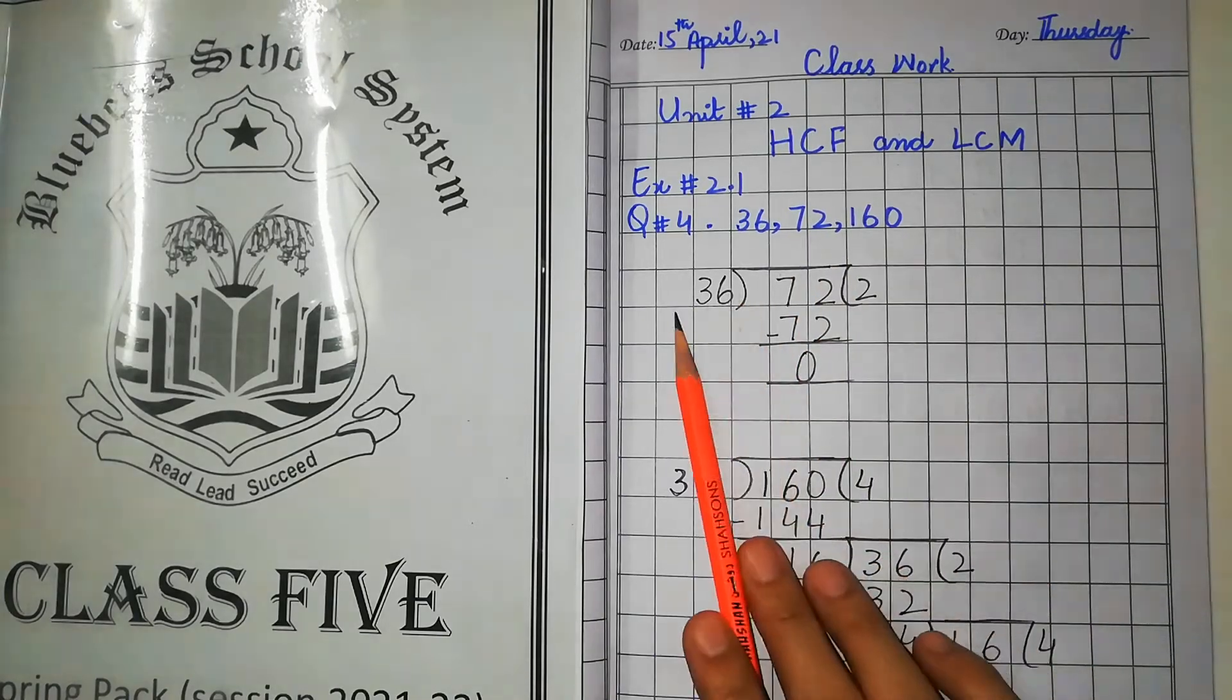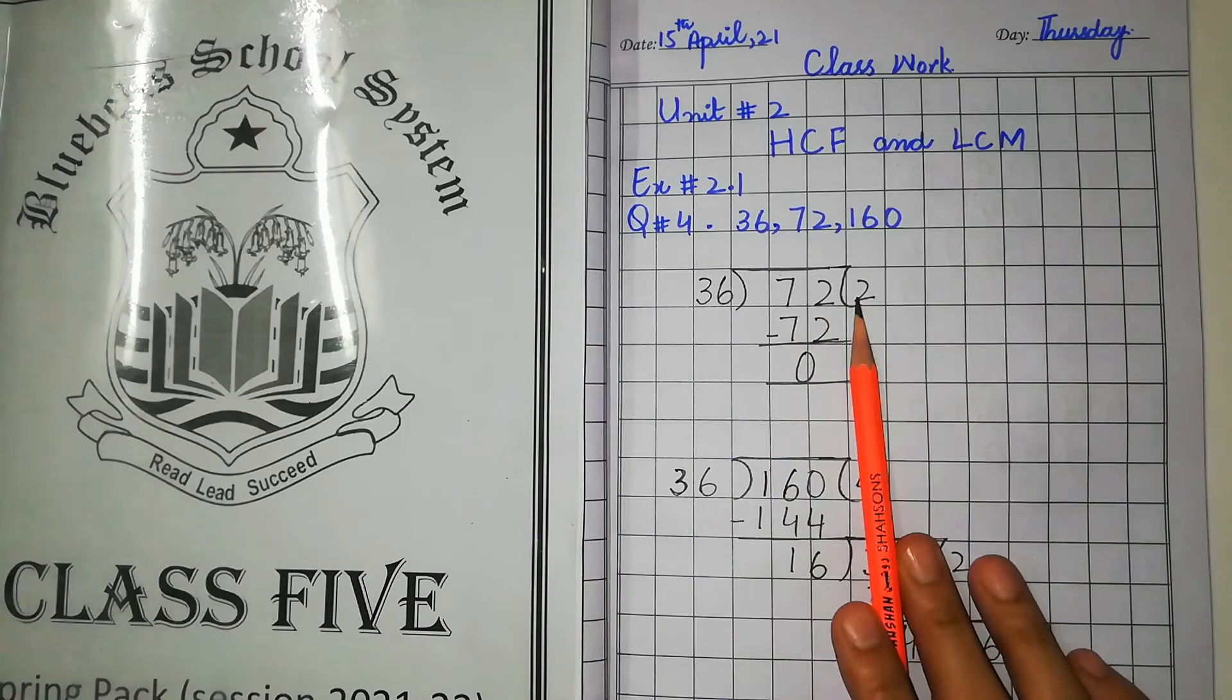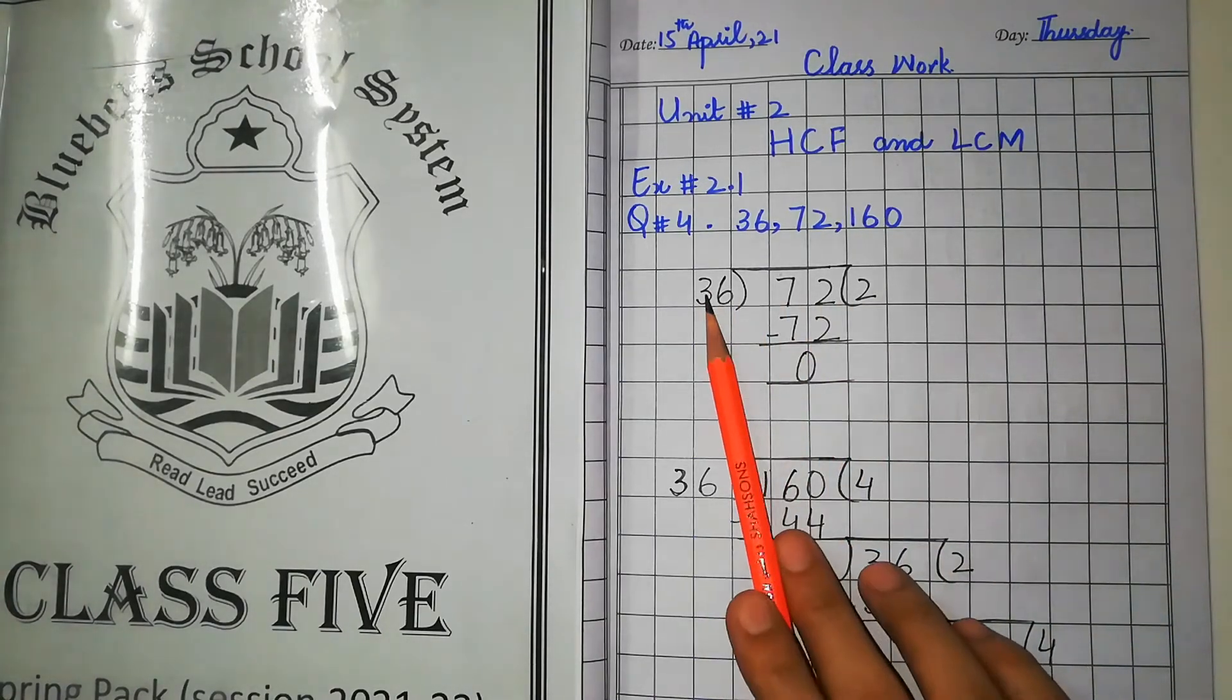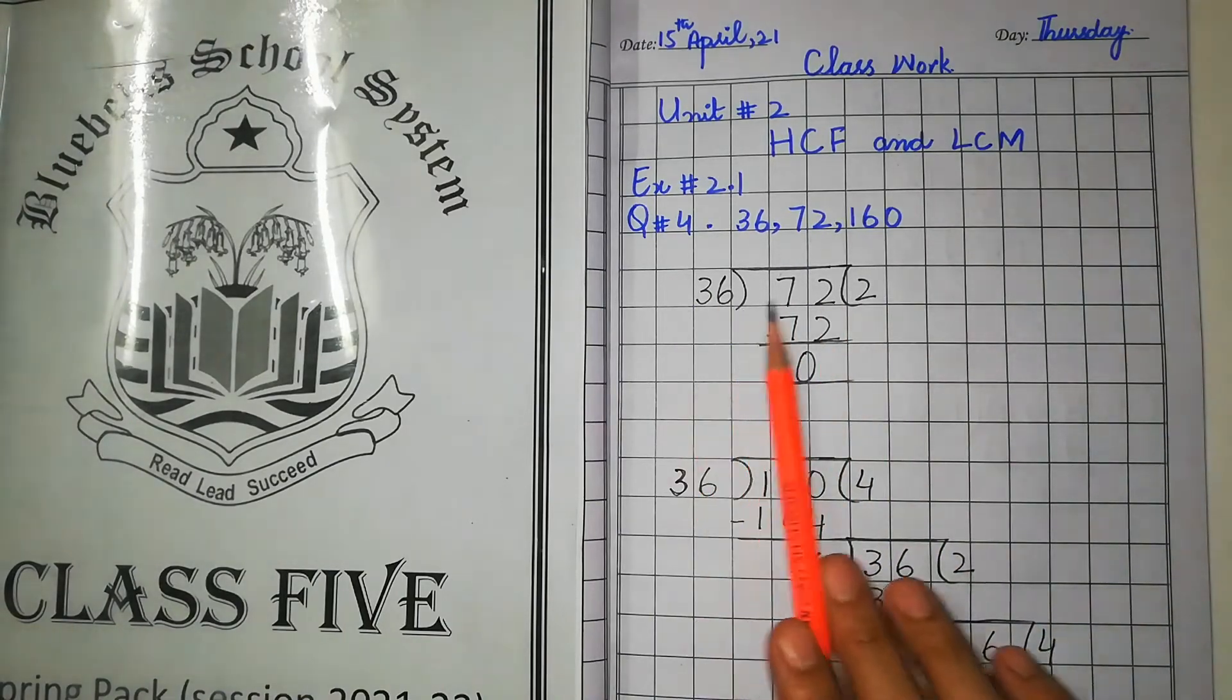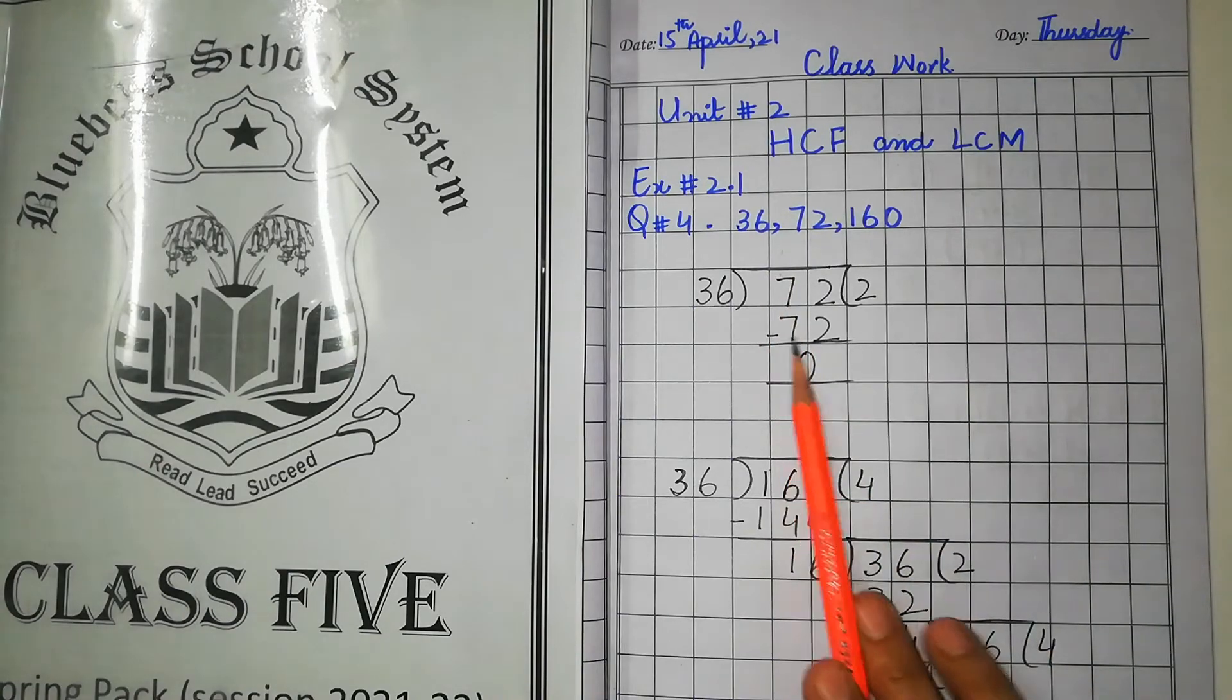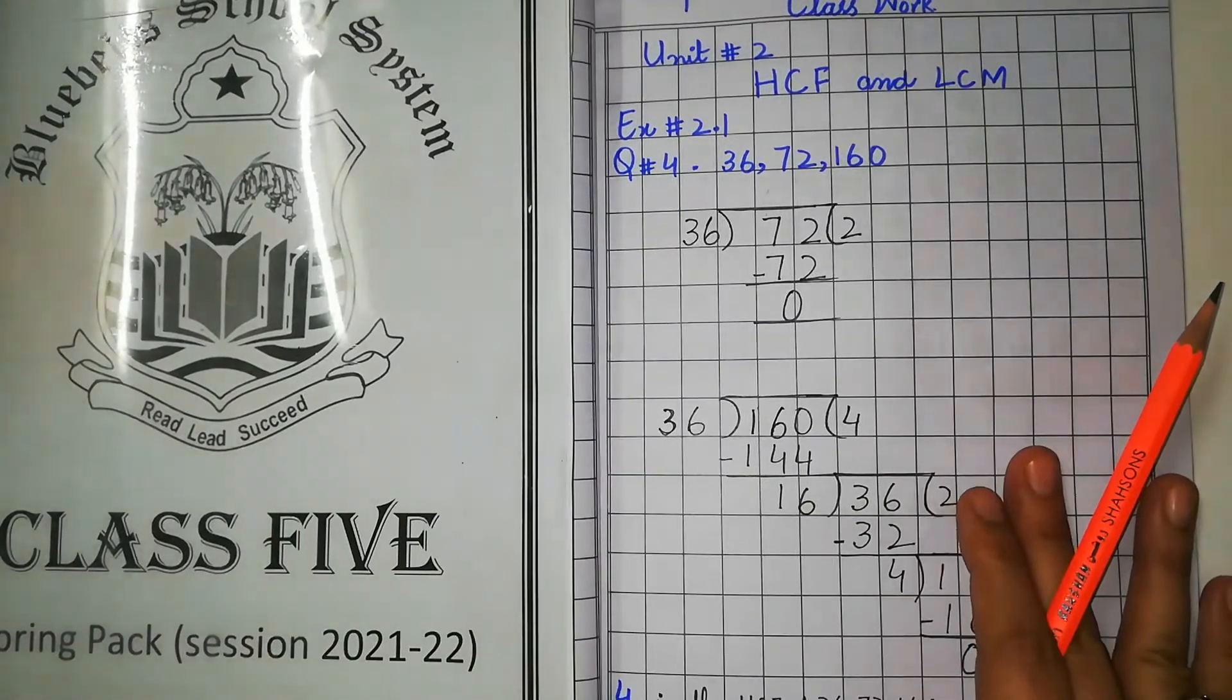We will use the smaller number as a divisor and what will be the dividend? Simply divide this. When we read the table of 36, 36 twos are 72. 72 minus it is 0. What is our remaining digit?